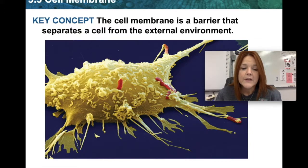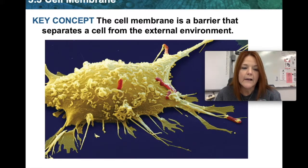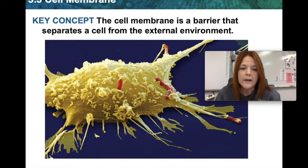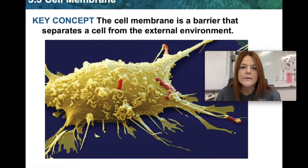In this picture of a cell, you can tell that the plasma membrane has a lot of depth to it. There are a lot of characteristics here, and we're going to talk about those today. The cell membrane or plasma membrane is a barrier that separates a cell from the external environment.